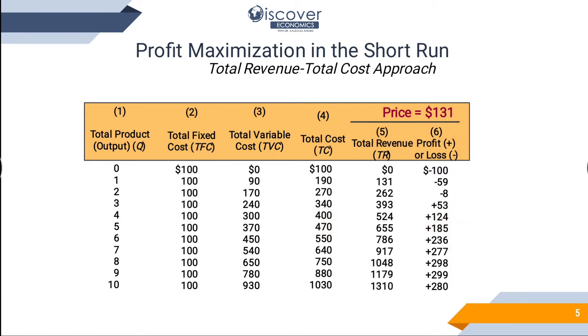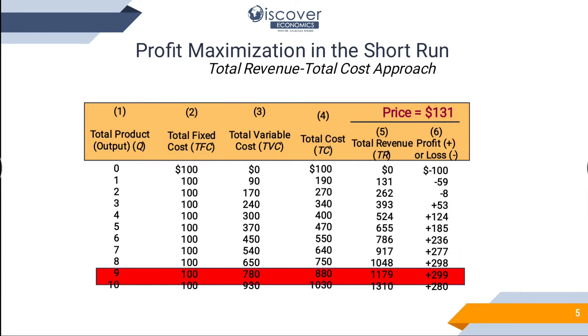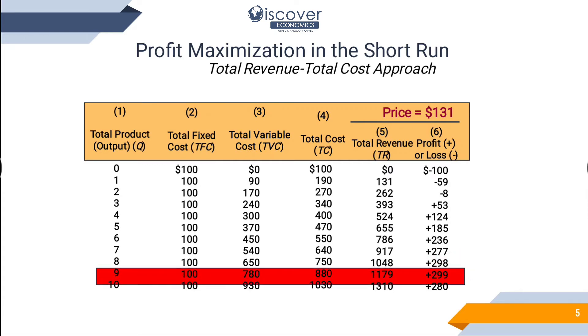This is how you draw your profits table. The highest profit here is where you should produce 9 items. At that quantity the profit is maximum.